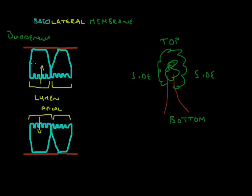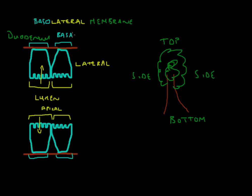The sides of the cells are easier — the sides facing other cells, these will be the lateral parts. Then there is another side of the cell, opposite to the apical side, that is connected or in contact with the basement membrane, and that part of the cell we call the basal part of the cell. So this area here will be the basal membrane of the cell — this is different from the basement membrane, which is this red area here.